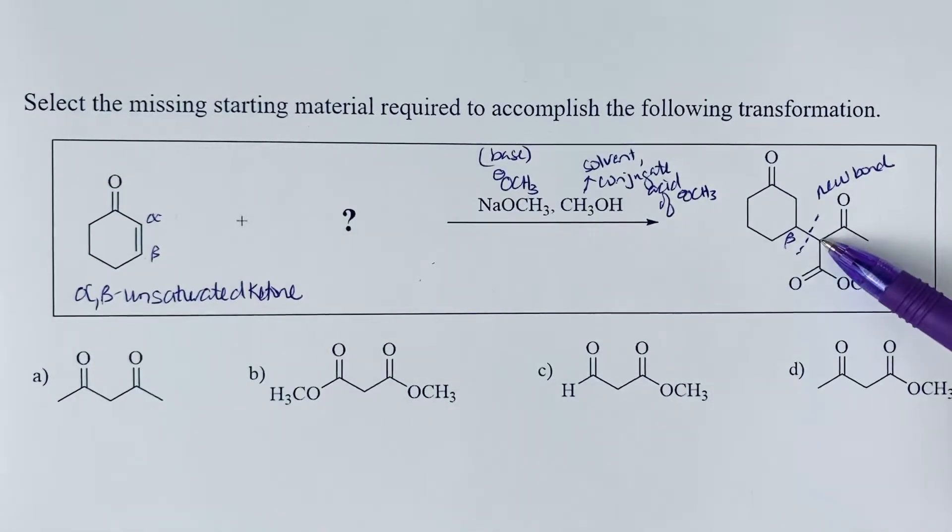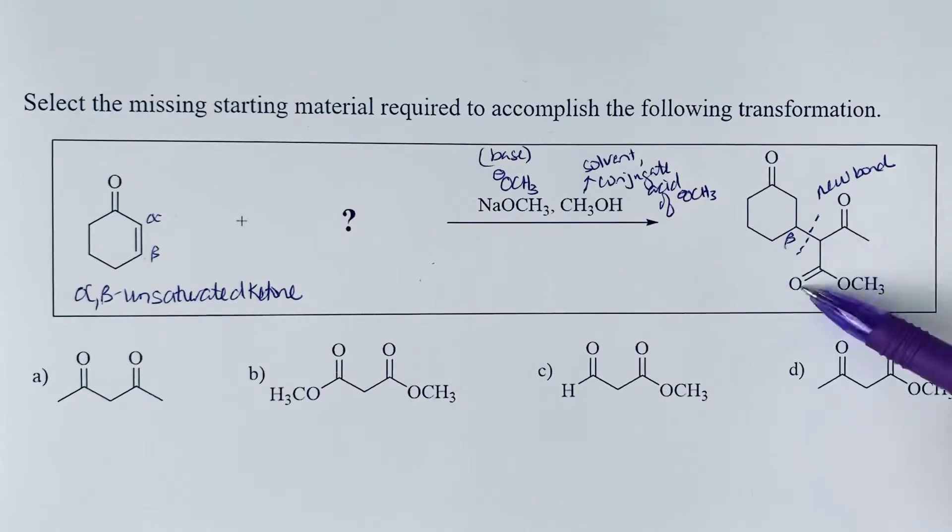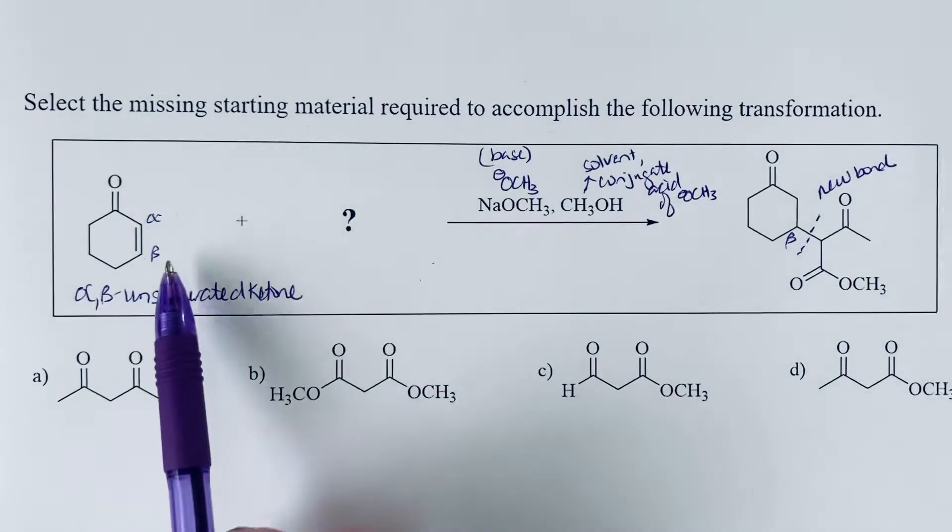So it looks like we're dealing with something that's in between, a negative charge in between two carbonyls. And so that would be a resonance-stabilized enolate, and so we could expect it to add to the beta carbon.